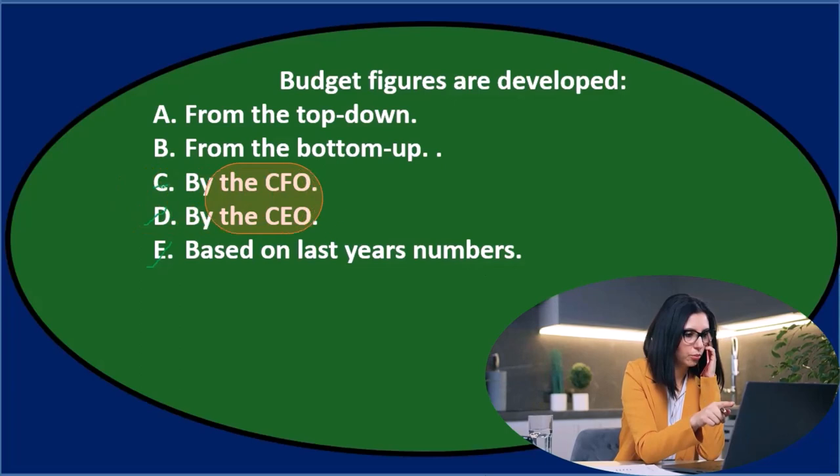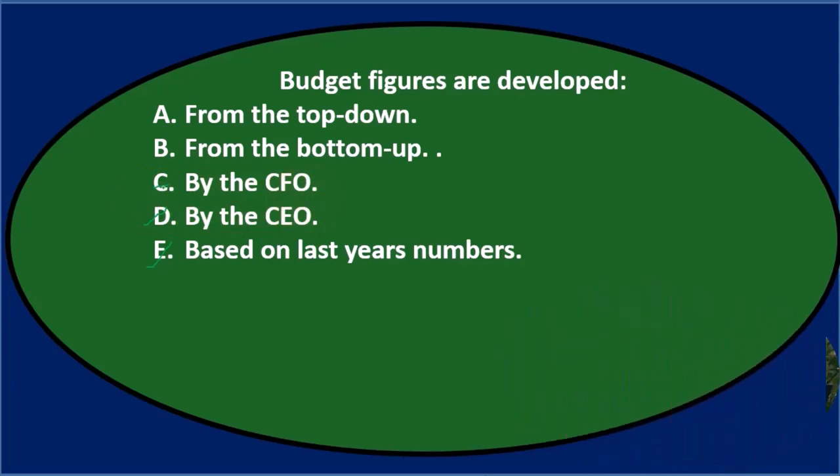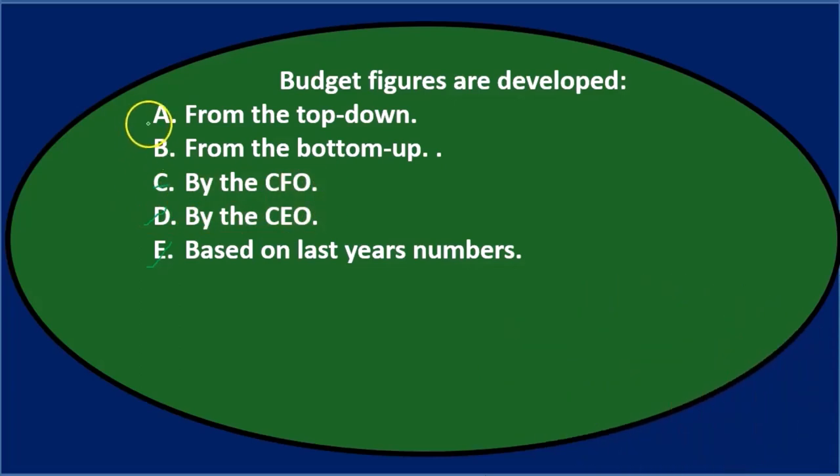And notice that the CFO and the CEO also line up to what we would think of as a top down approach. In other words, we're talking about the structure of the organization being these are the big guys at the top making the decision top down, and then they just communicate that decision.